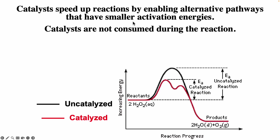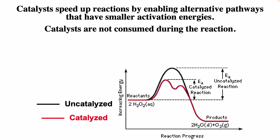If we have a catalyst, it can greatly speed up the reaction because it will provide a pathway with a smaller activation energy. The black line corresponds to the uncatalyzed reaction; the red line corresponds to the catalyzed reaction. Notice the catalyst does not change the energy of the products or reactants. The catalyst will not change the position of equilibrium, but it lowers the activation energy, so the system will get to equilibrium much faster.